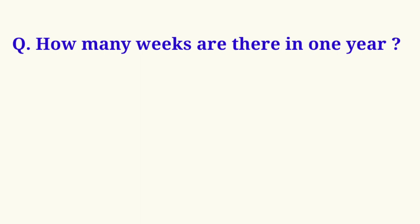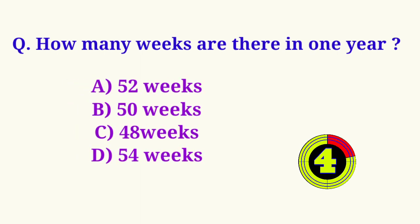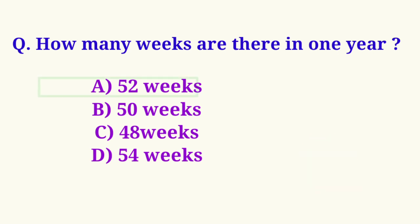How many weeks are there in 1 year? Option A, 52, is the correct answer.